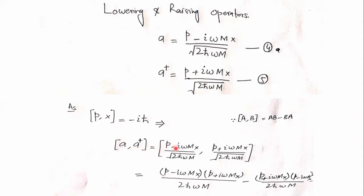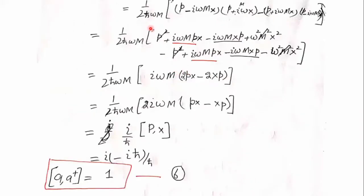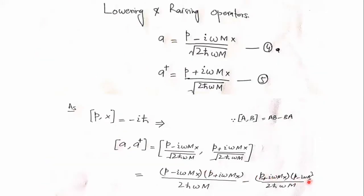For the commutator of a and a†, we expand the product. When you multiply them out, you get terms involving px and xp. Since px and xp are not equal to each other — they do not commute and do not share common eigenvalues — px is not equal to xp. This is the relation that captures that non-commutativity.